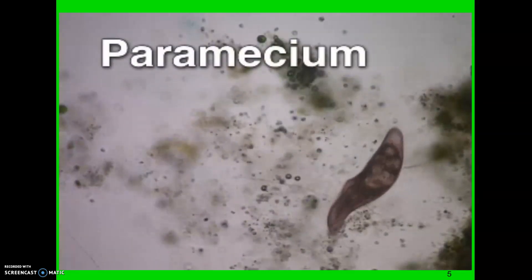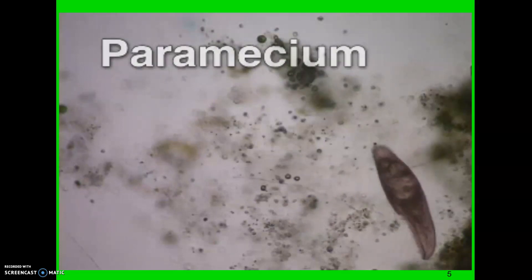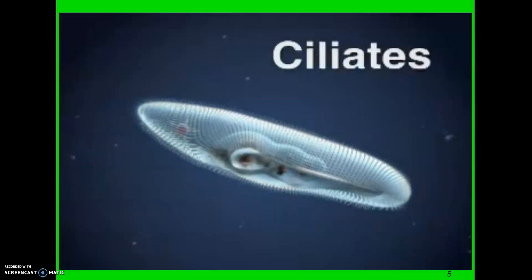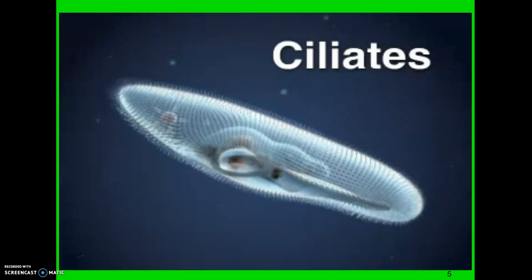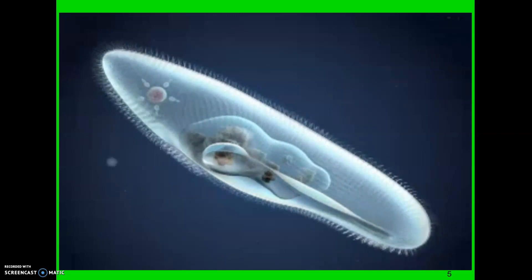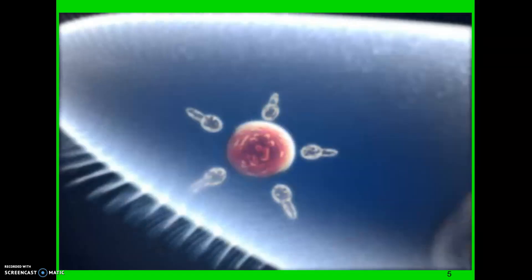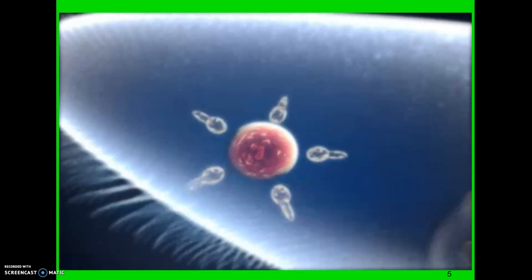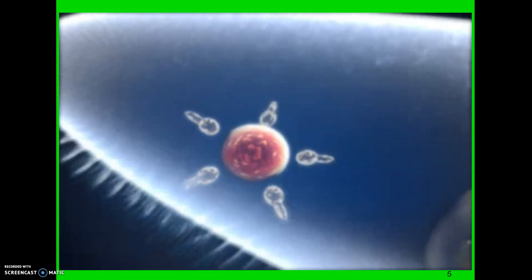This interesting-looking protozoan called a paramecium is in the phylum Ciliophora. Ciliates, as they're commonly called, are surrounded by many hair-like projections called cilia. Cilia help these organisms move through the water and also guide food into the cell. Ciliates are different from other protozoans in that they have two different nuclei within the cell. Ciliates can reproduce asexually via binary fission, as well as sexually in a process referred to as conjugation.